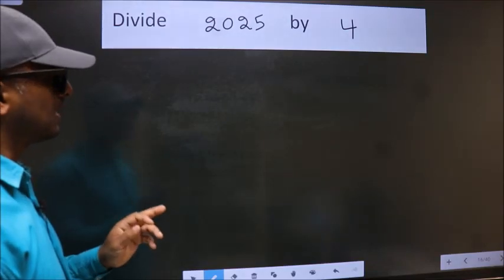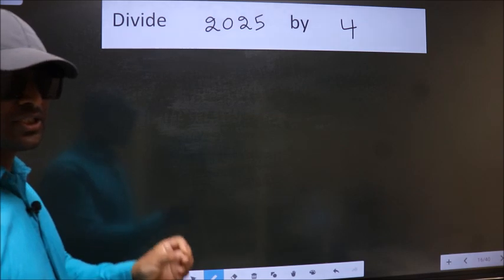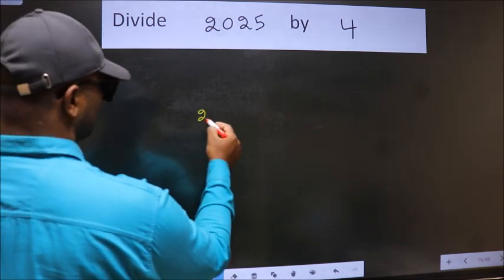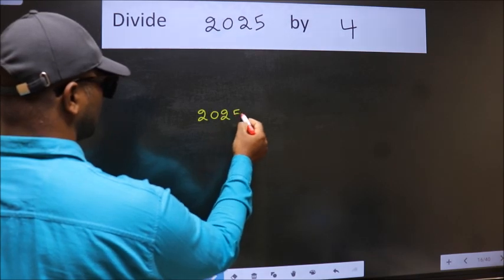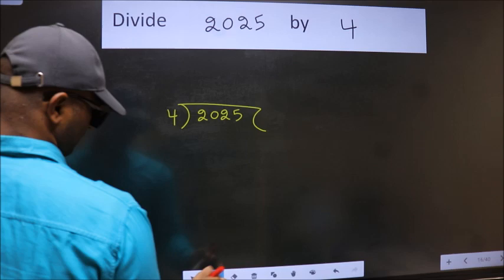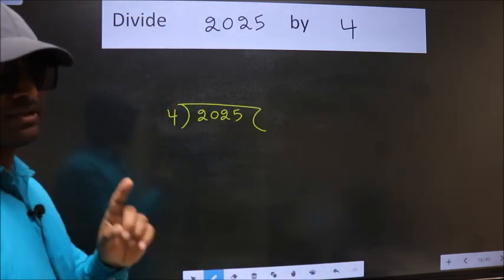Divide 2025 by 4. To do this division we should frame it in this way. 2025 here, 4 here. This is your step 1.